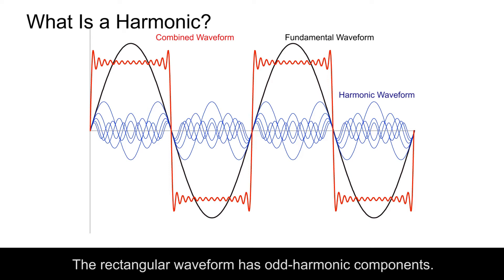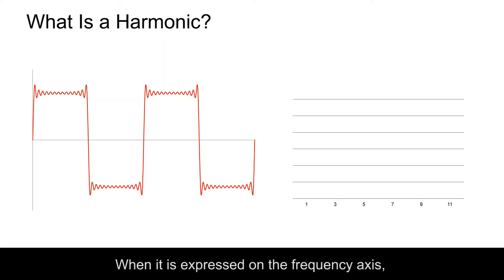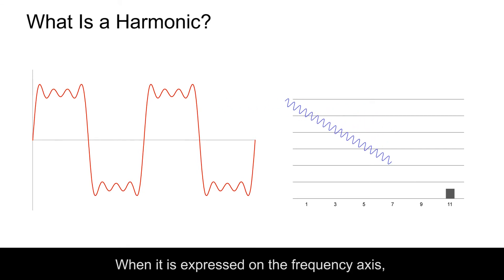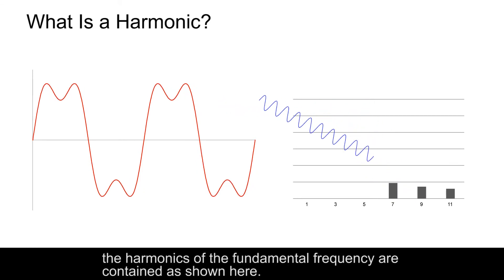The rectangular waveform has odd harmonic components. This can be understood by Fourier analysis. When it is expressed on the frequency axis, the harmonics of the fundamental frequency are contained as shown here.